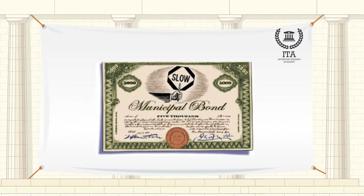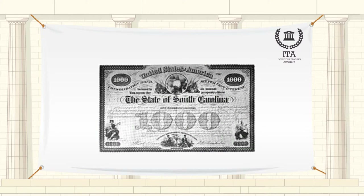When the Muni contract is rising faster or falling more slowly than the treasury contract, the MOB spread will rise or widen. Conversely, when the treasury contract is outperforming the Muni contract, the MOB spread will fall or narrow.